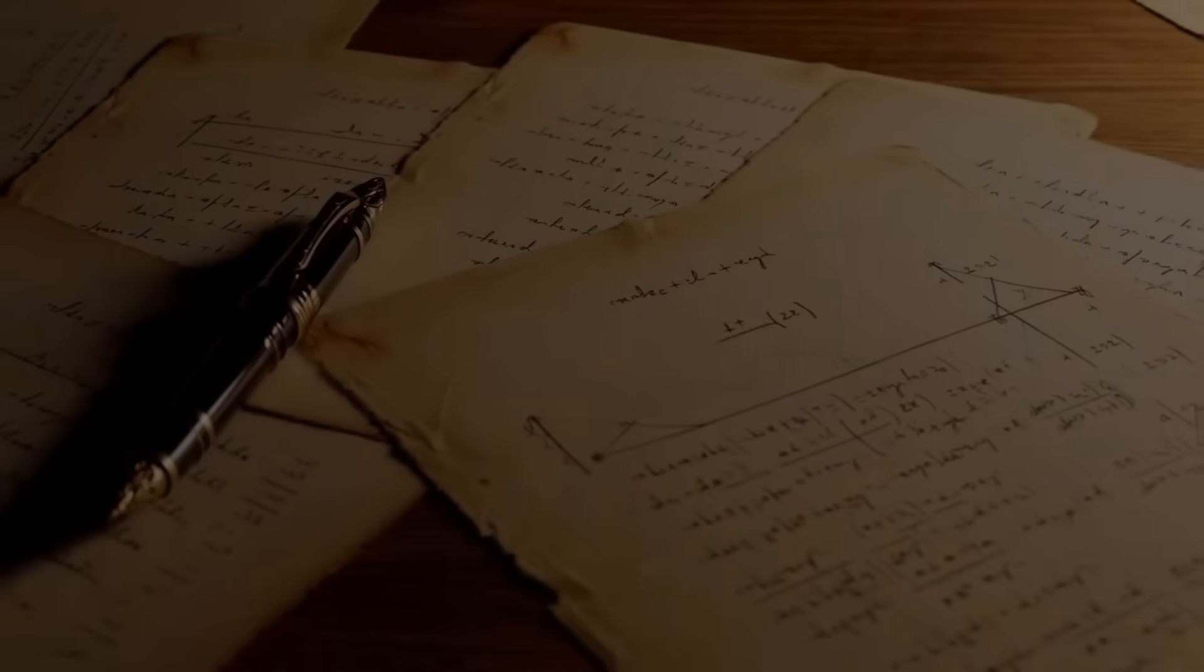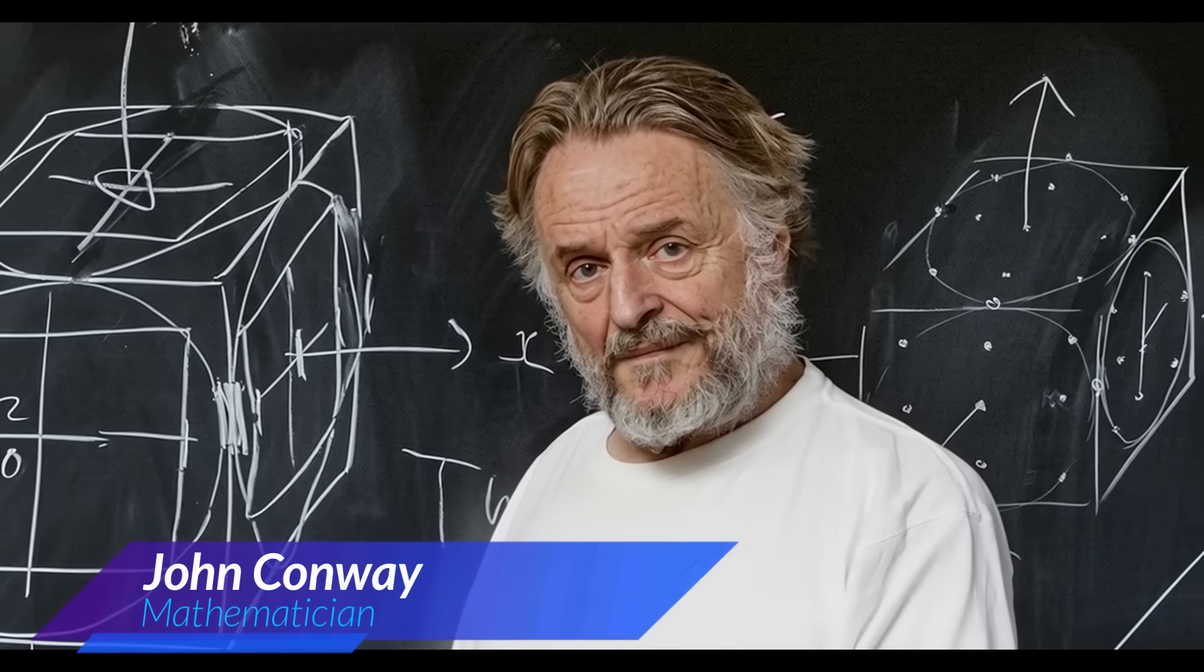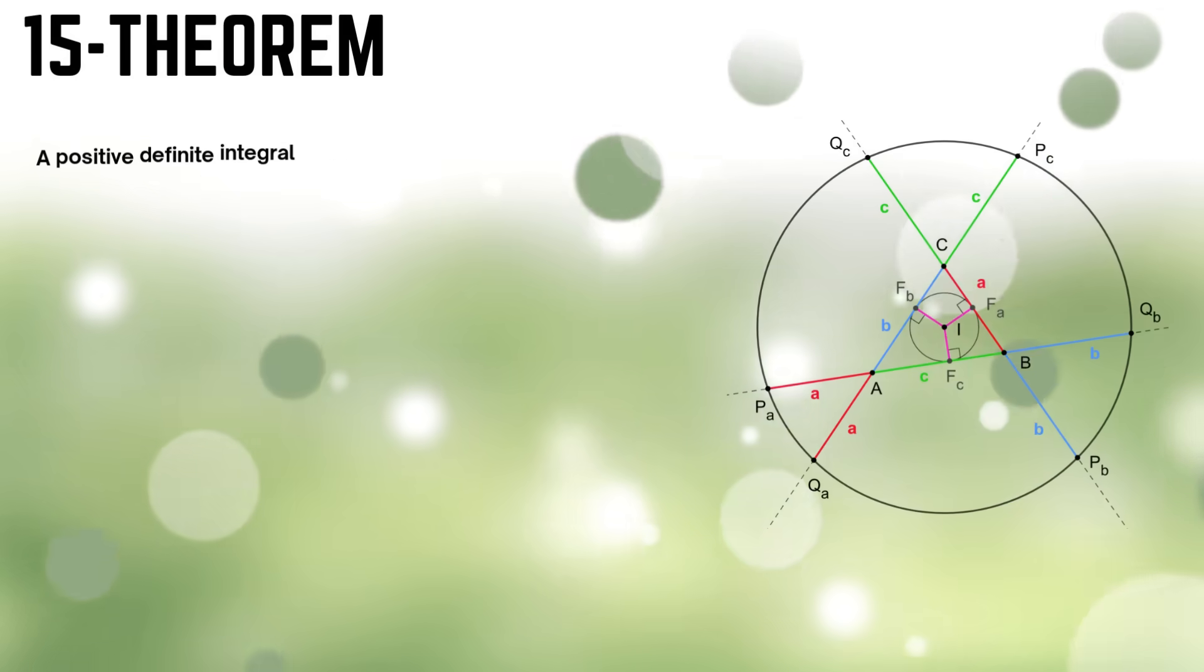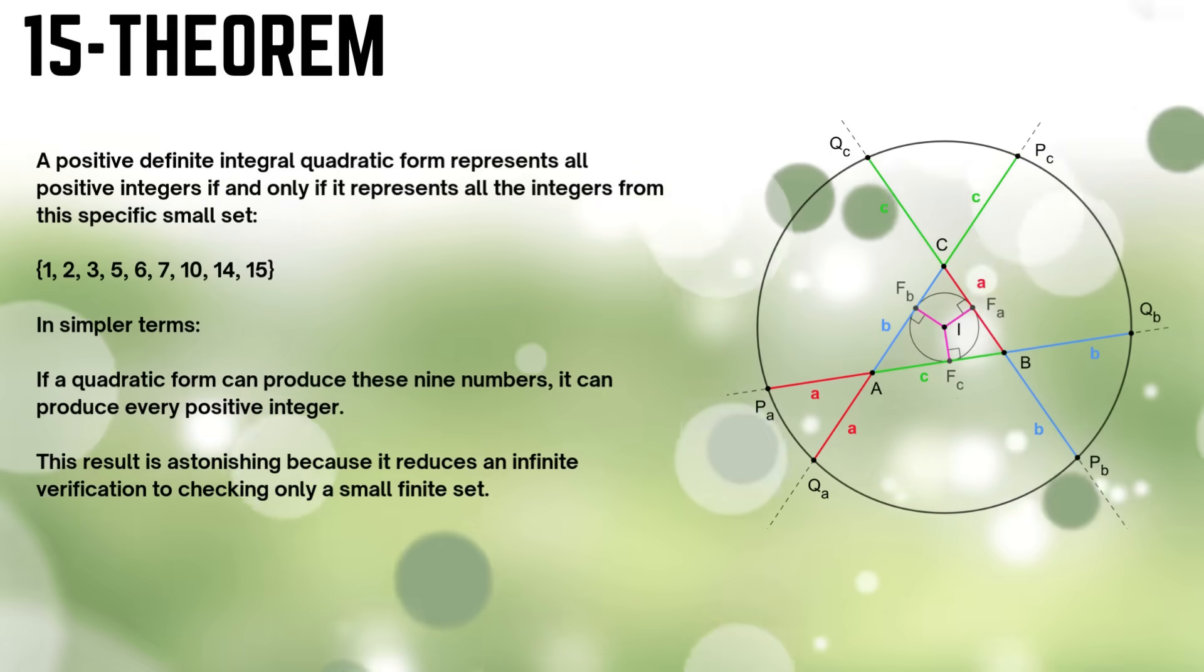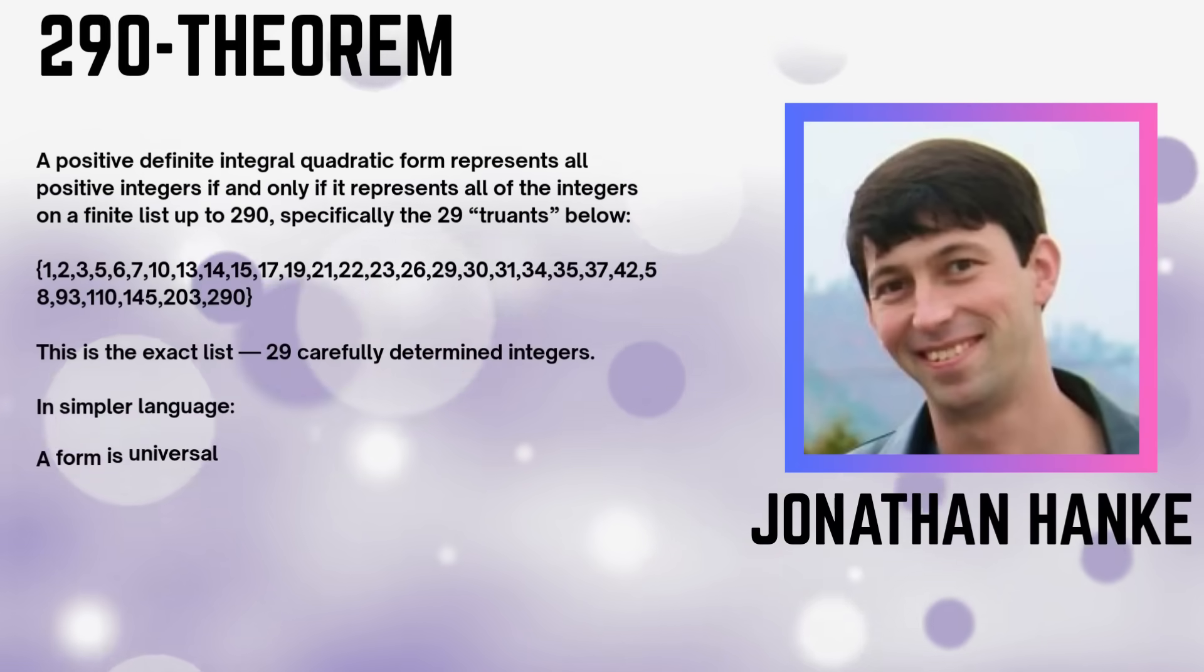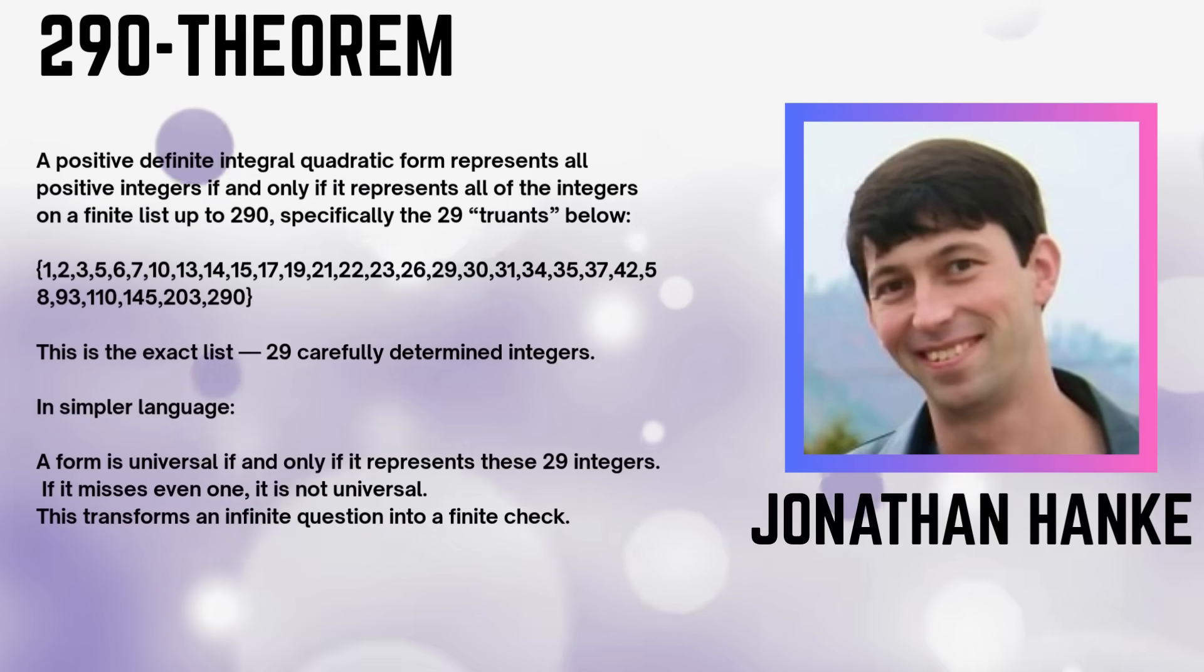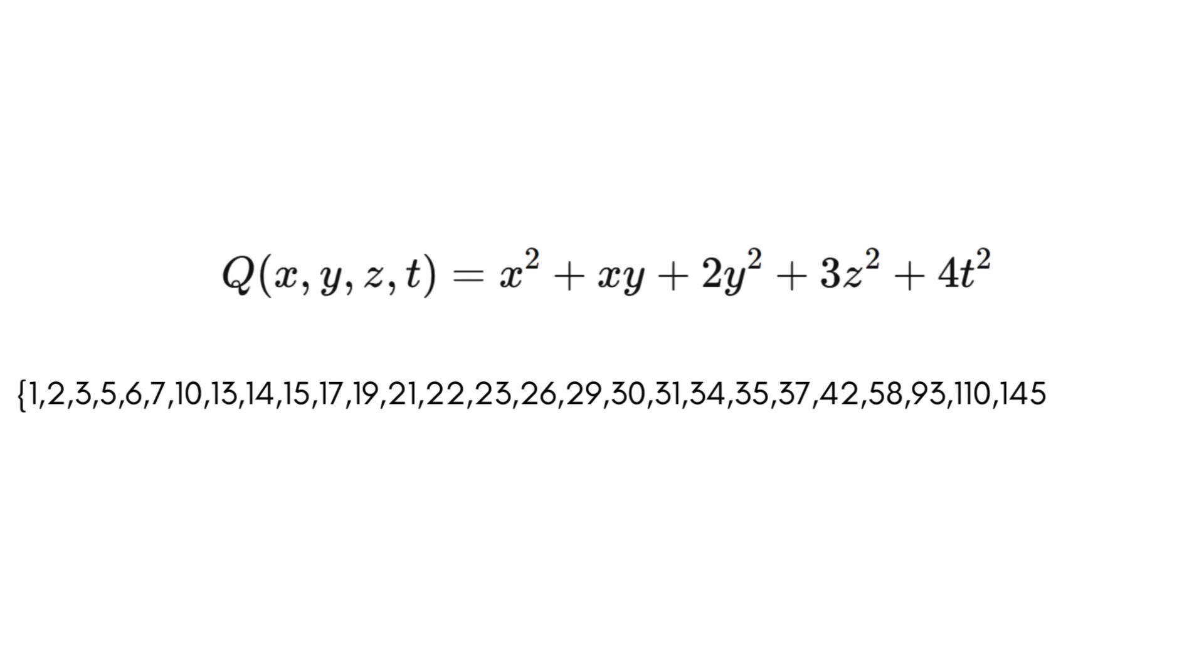Then came another triumph. The classification of quadratic forms. Almost a century earlier, the legendary mathematician Conway and collaborators had proven the 15 theorem, a result describing which quadratic forms could represent all positive integers. But the deeper, universal classification, the fully generalized theorem, remained elusive. Working with Jonathan Hanke, Bhargava pushed the boundary further, proving the 290 theorem, a single statement describing precisely which quadratic forms represent all positive integers. It was a clean, elegant resolution to a vast classification problem that had resisted mathematicians for generations.